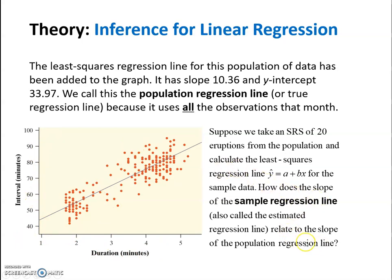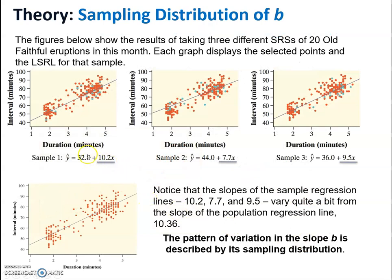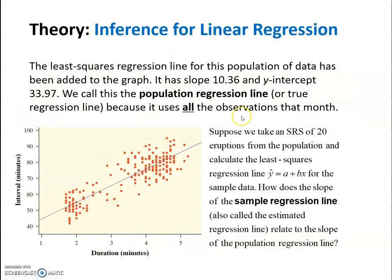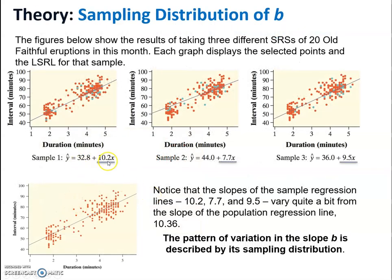How does our slope going to relate? You can notice if the true value was 10.36 and also 33.97, our slopes are different, as are our y-intercepts. They vary quite a bit. This is going to happen when you do samples. This is what happens when you have samples.